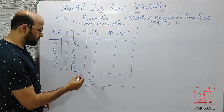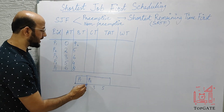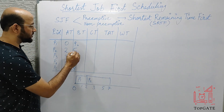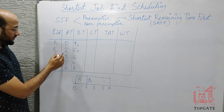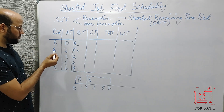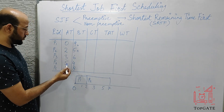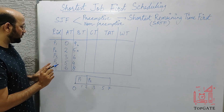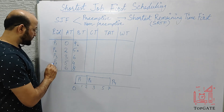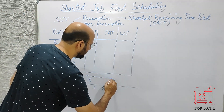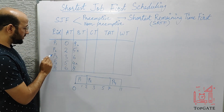P2 completes its 5 units at time 7 (2 + 5 = 7) and terminates. At time 7, all processes have arrived, and we have P1, P3, P4, and P5 in the RAM. P4 has the shortest remaining time of 4, so P4 takes over and runs for 4 units, completing at time 11. P4 terminates, leaving P1, P3, and P5.